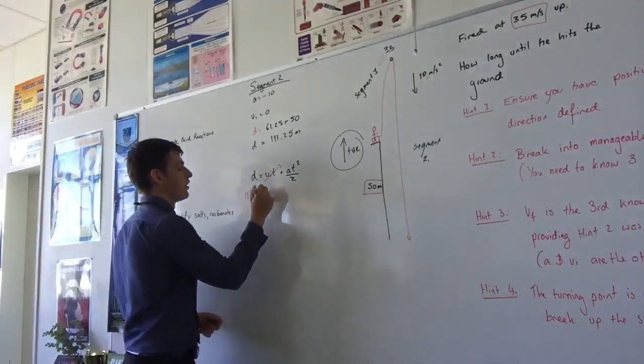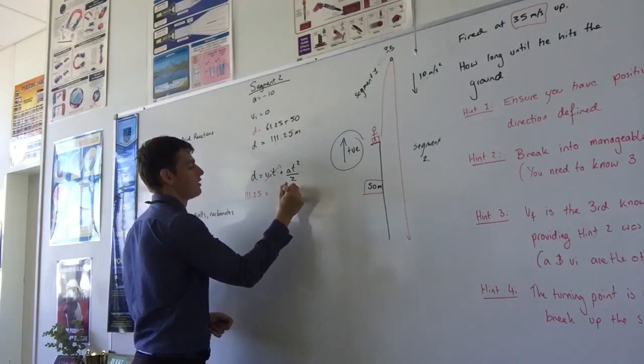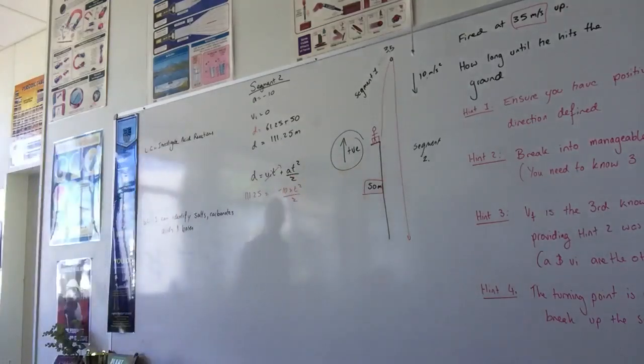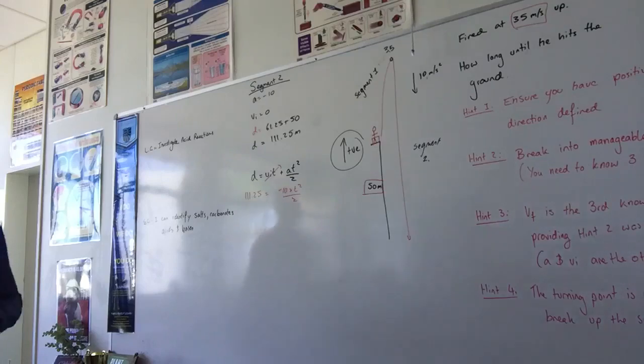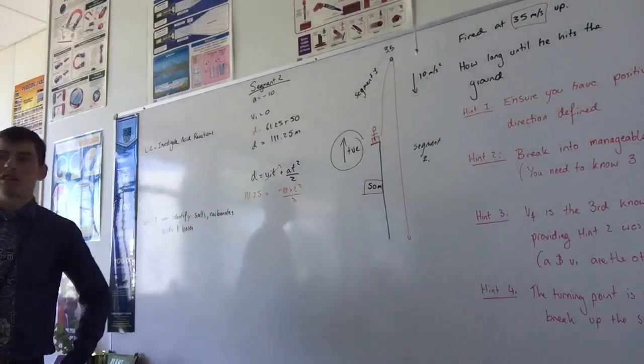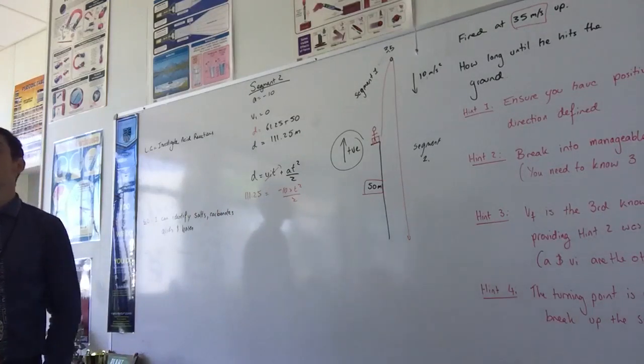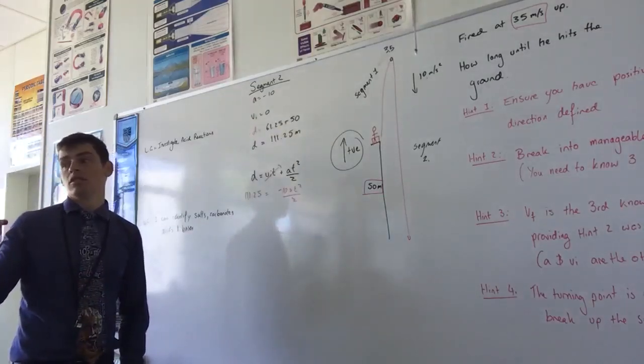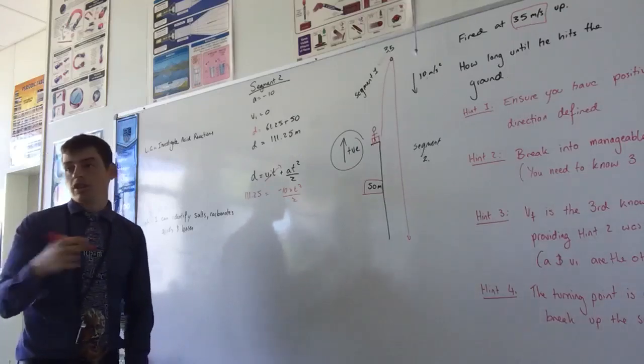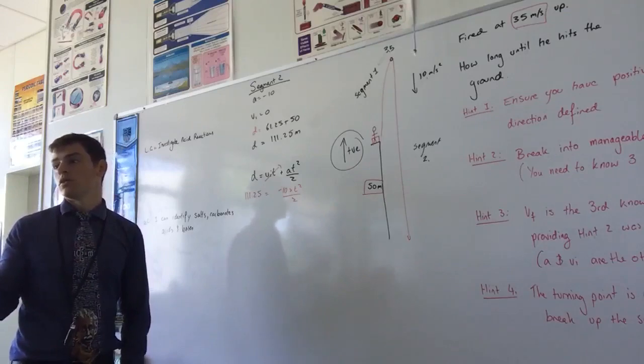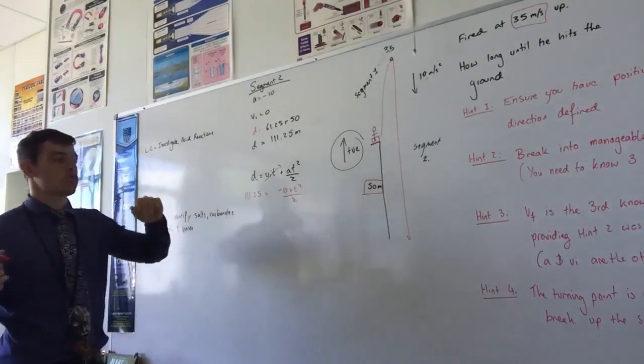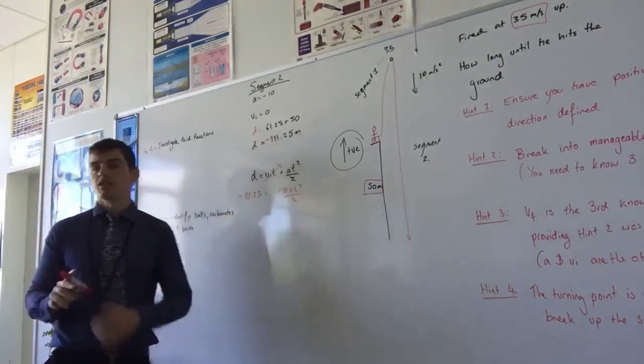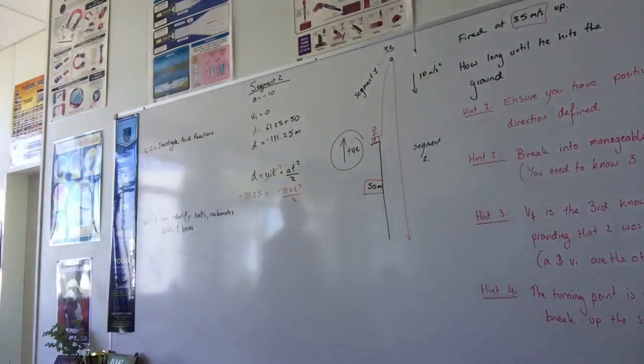So now we've got 111.25 equals A which is negative 10 times T squared divided by 2. I'll let you rearrange that to your heart's content. What have I stuffed up? Nothing. I'm going to get a syntax error here. I've made a mistake. You just put negative. Positive acceleration. No, I've got negative acceleration. Negative answer. Yeah, but why is my answer not? I should have a positive. Because negative divided by positive. So which value should I change? Why should my distance be negative, not positive? Because I'm travelling 111 metres down.